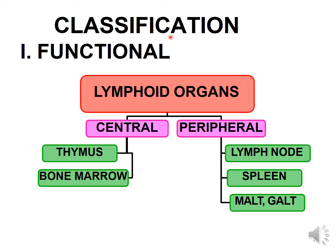Coming to the classification of lymphoid tissues, there are two classifications. The first is functional classification: lymphoid organs are functionally classified into central and peripheral. Central lymphoid organs include the thymus and bone marrow. Peripheral organs are lymph nodes, spleen, MALT (mucosa-associated lymphoid tissue), and GALT (gut-associated lymphoid tissue).